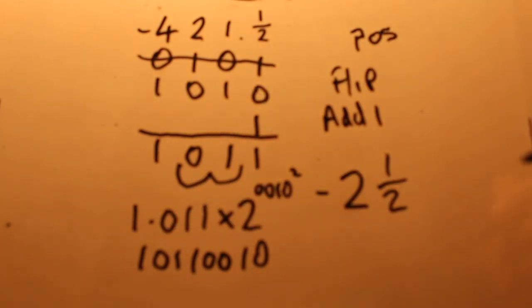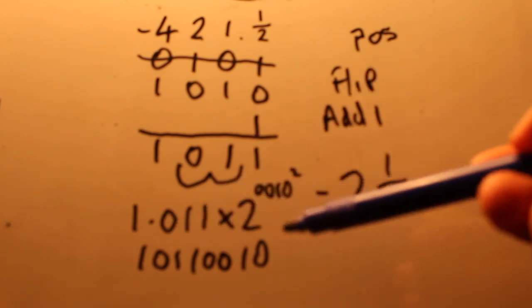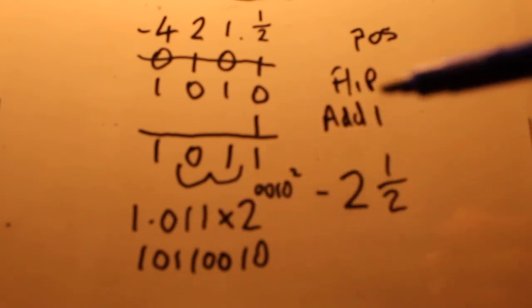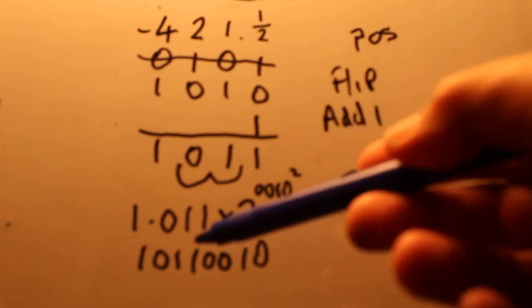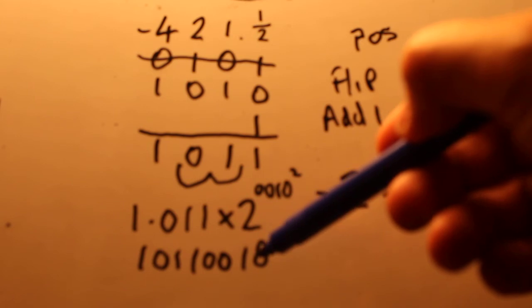So if we want to work out what that number would be and we've got to prove to ourselves that that is actually minus two and a half we would effectively do the reverse of that. So we know that the mantissa is one point zero one one and we know that the exponent is two.